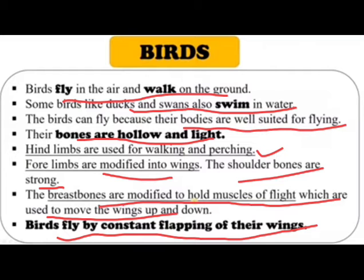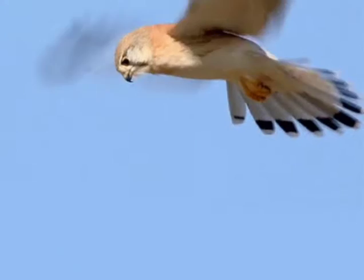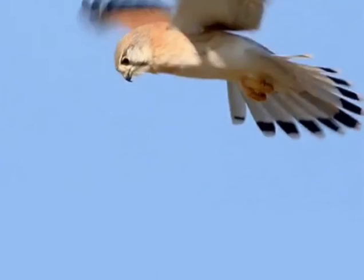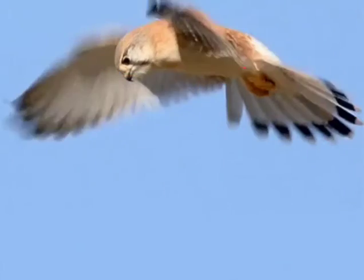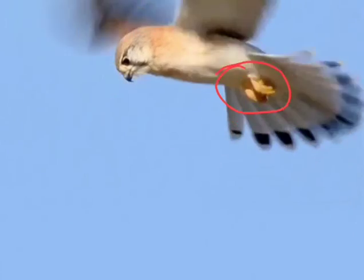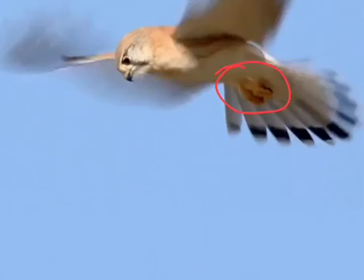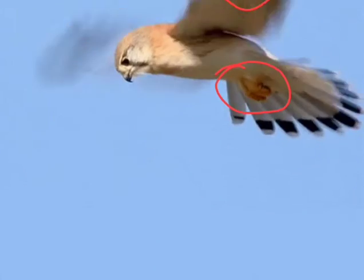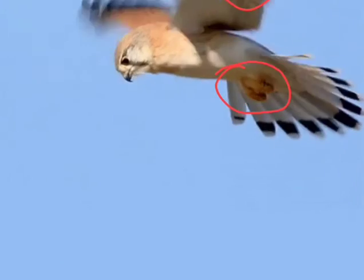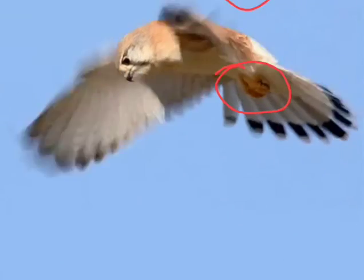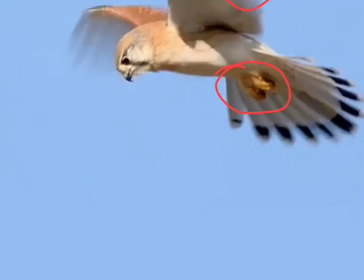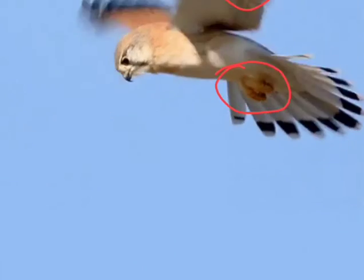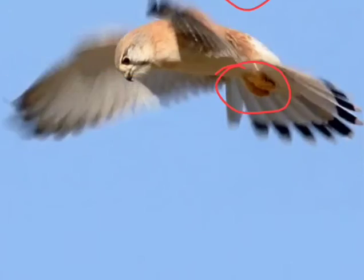Birds fly by constant flapping of their wings. The forelimbs are modified as wings, and the hind limbs help in walking and perching. This is about the movement of birds.